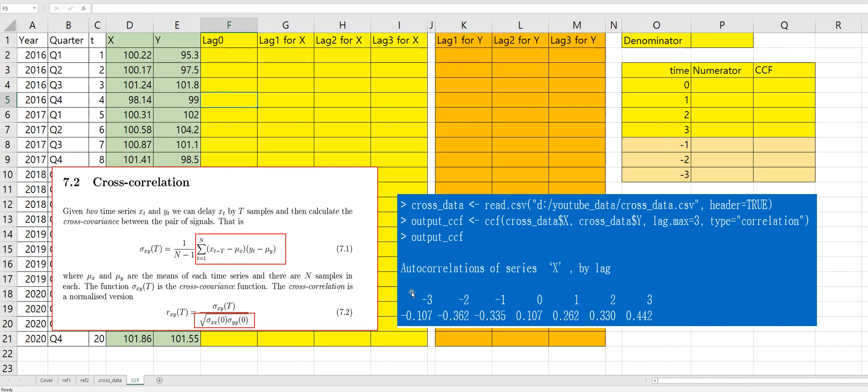Alright, let me show you how to get this cross-correlation for lag 1, lag 2, lag 3, and minus lag 1, minus lag 2, minus lag 3. So, in this Excel spreadsheet, we don't need to calculate this part. Because numerator part and denominator part includes N-1. So, we can exclude this part. We need to focus on this red box formula.